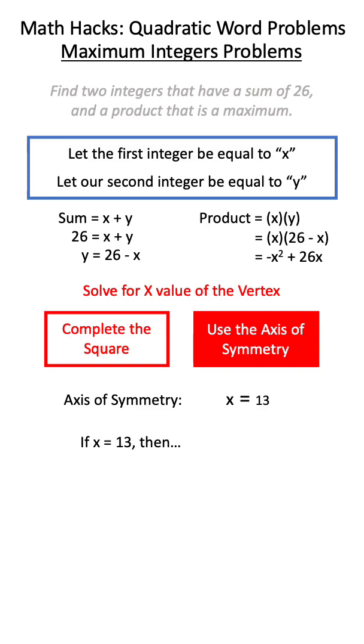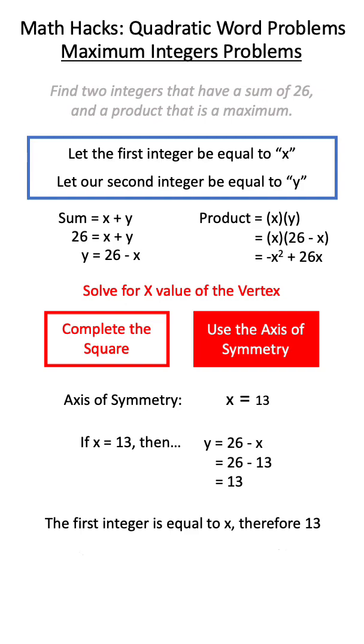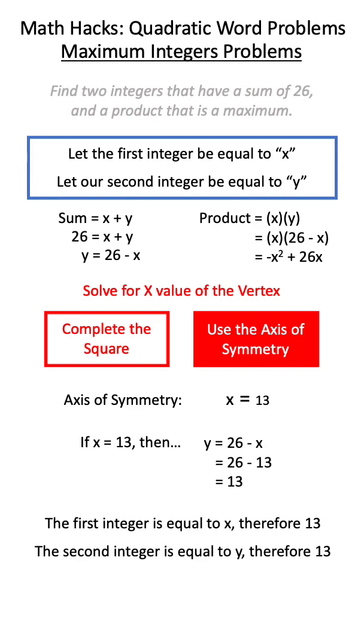If x is equal to 13, then we can use our sum equation to determine that y is also equal to 13. We know that our first integer is equal to x and our second integer is equal to y. Therefore, both integers are equal to 13.